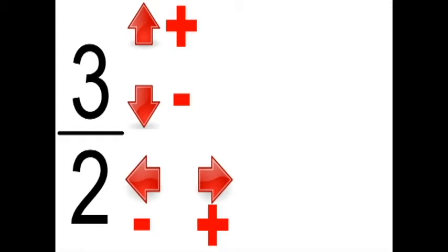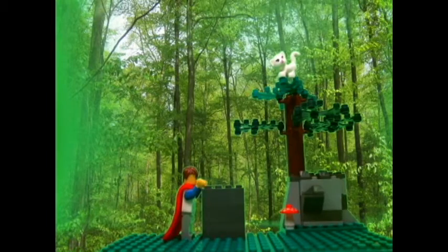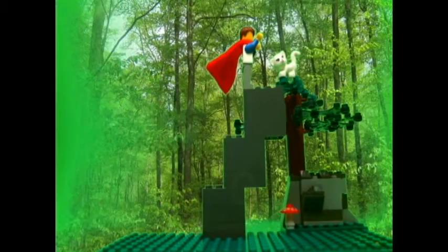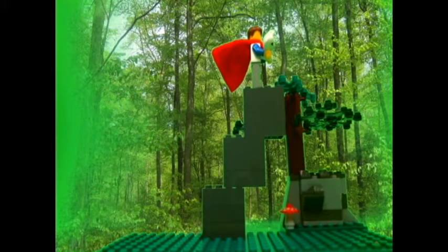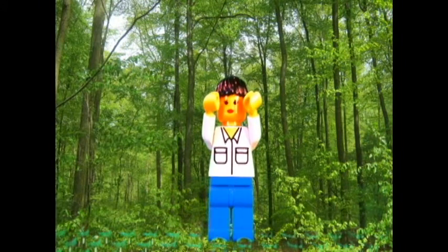Since both the numerator and denominator of the slope of 3 halves are positive, Math Man will create steps that go up 3 and right 2 units. Math Man saves the day and returns to his home to count his gold.